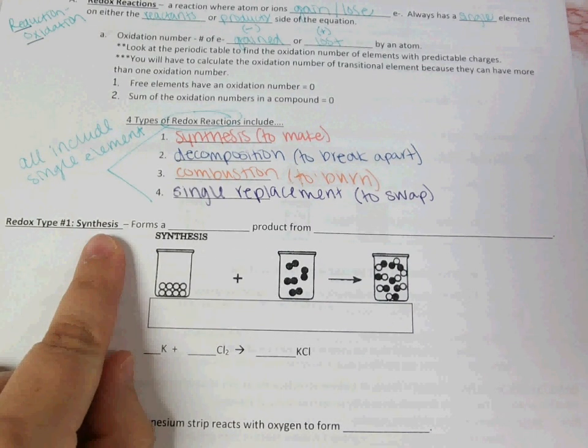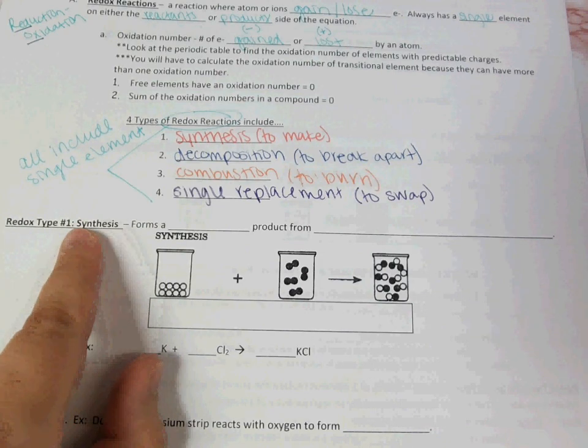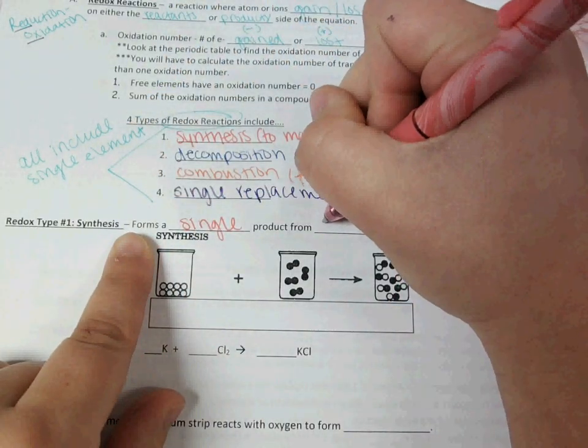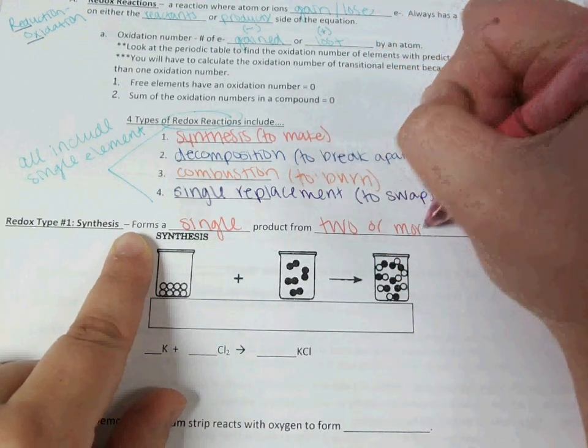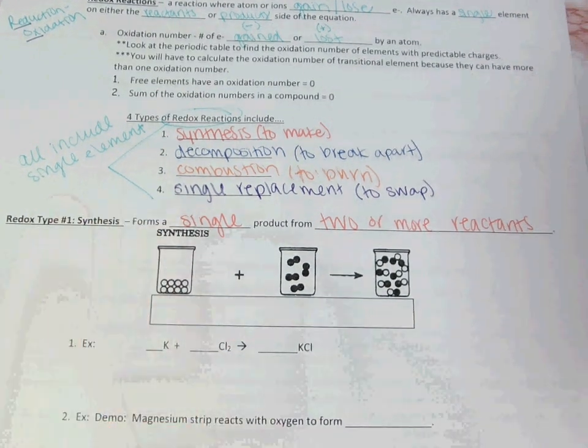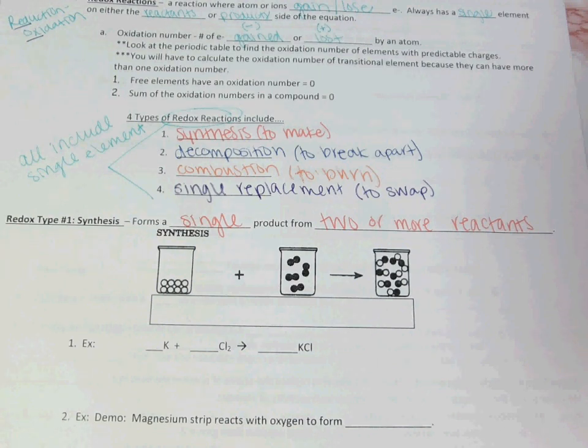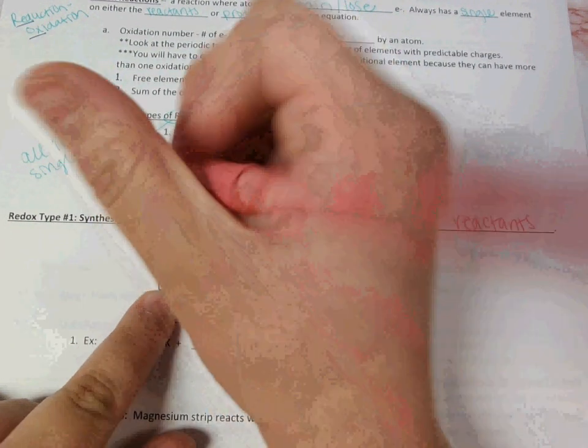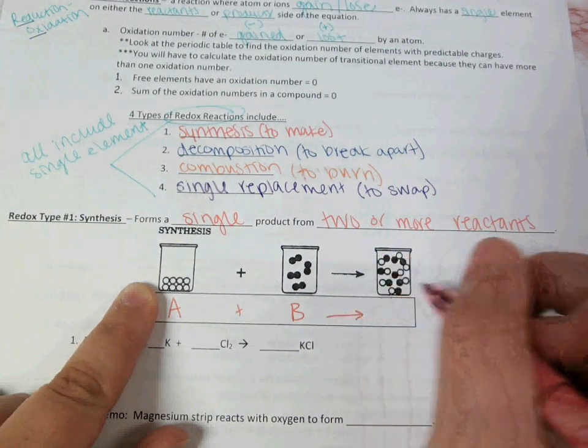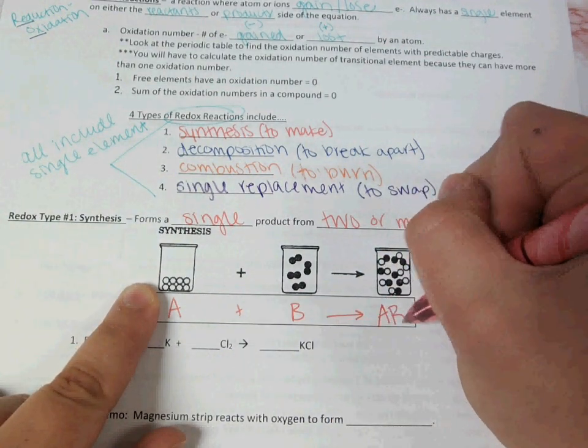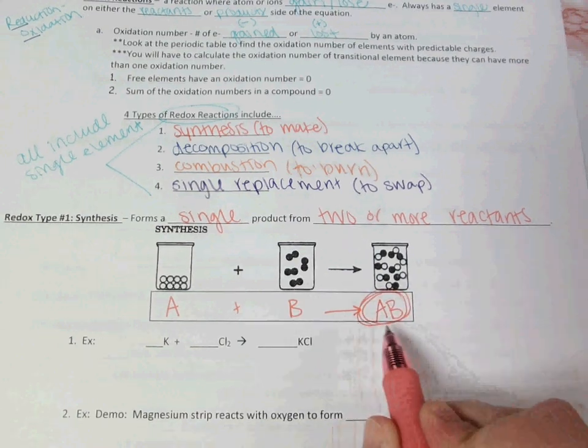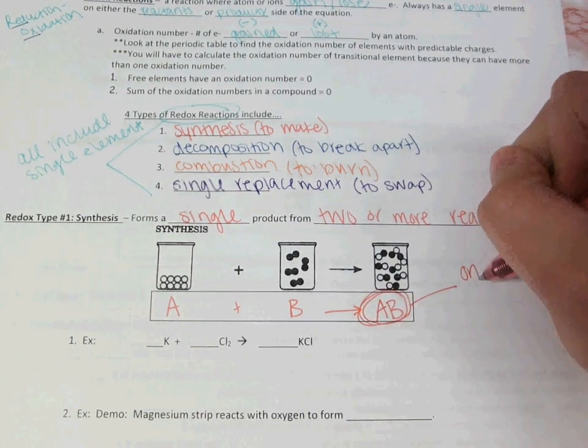Our redox type 1 is a synthesis reaction, and a synthesis reaction will form a single product from two or more reactants. For example, if I have element A reacting with element B, they would come together to form a single product of element or compound AB. Having just one thing on your product side, not multiple things added together, but one thing, tells you that it is a synthesis reaction.